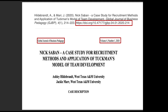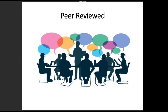Clues that point in this direction are the digital object identifier found in the citation. Where it was published is another clue — it was published through the Global Journal of Business Pedagogy, found at the top left side of the article. Volume and issue number are indicative of a journal article as well. Underneath the title, there is a team of collaborators listed with the institution they are from. Ashley Hildebrandt and Jackie Marr, both from West Texas A&M University, are listed as the writers.